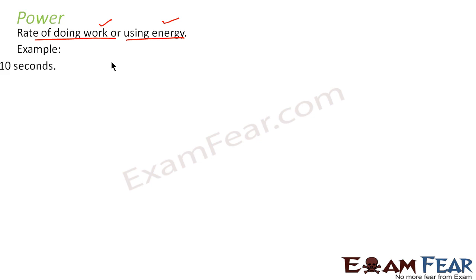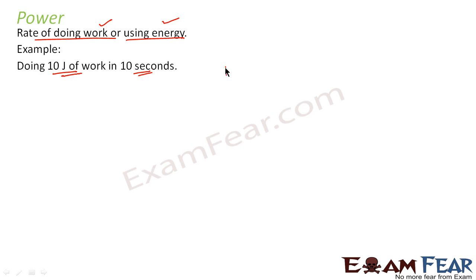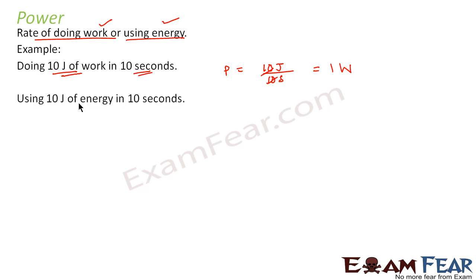Let us take an example of power. Suppose you are doing 10 joules of work in 10 seconds. Power will be equal to work done per unit time, so 10 joules divided by 10 seconds, which equals 1 watt or 1 joule per second. Similarly, using 10 joules of energy in 10 seconds also gives a power of 1 joule per second.